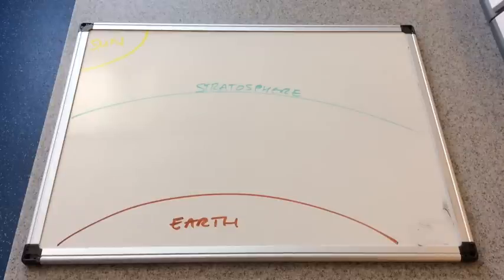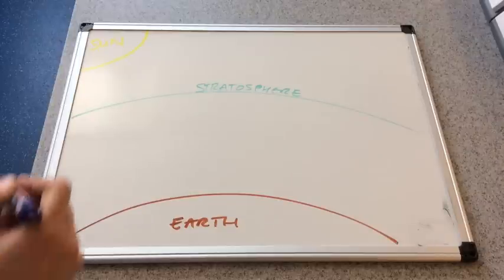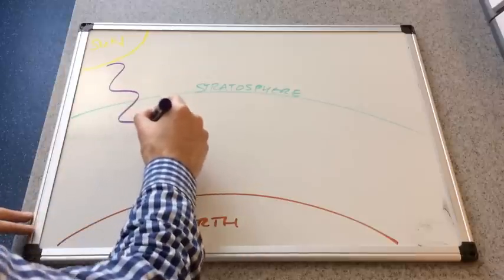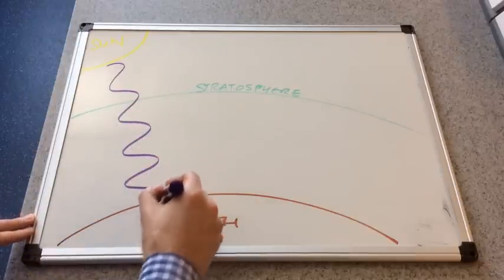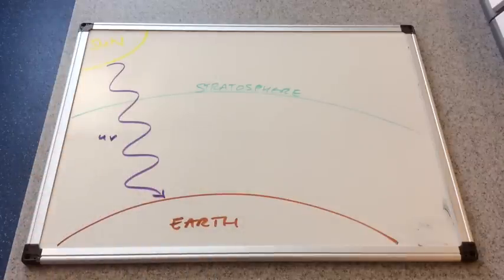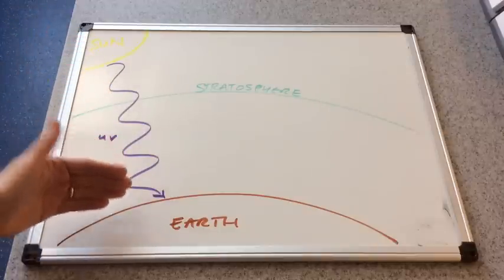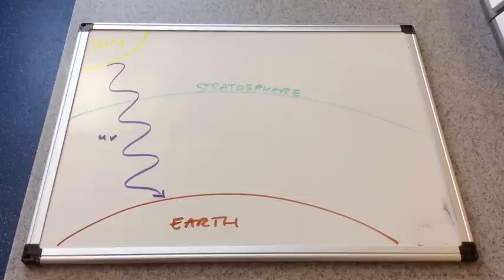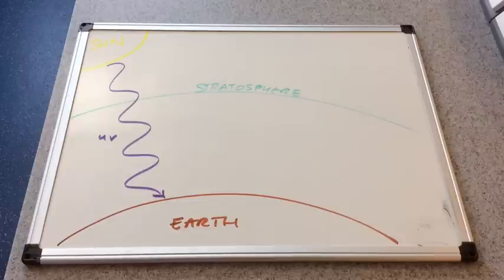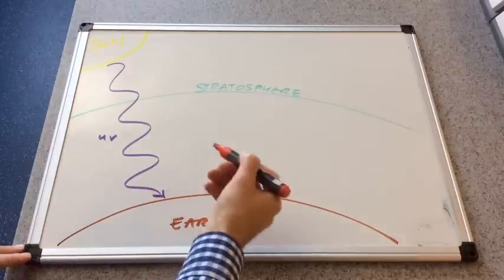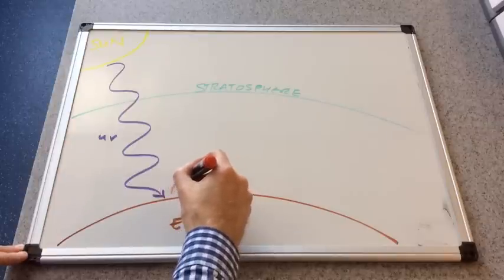The first thing to be aware of is the Sun provides us with UV radiation. So I'm going to represent that with a purple wave. This is UV from the Sun, so it enters our atmosphere and it reaches Earth. Now what happens is the Earth absorbs the UV and then re-emits it, but it doesn't re-emit it as UV, it re-emits it as infrared.